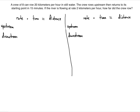If they row upstream, they will go slower relative to the ground than 20 km/h. If they row downstream, they go along with the stream, meaning relative to the ground they will row faster than 20 km per hour. So upstream rate is going to be less than 20 — specifically 2 km per hour less, so we subtract 2 from 20 for the upstream rate.